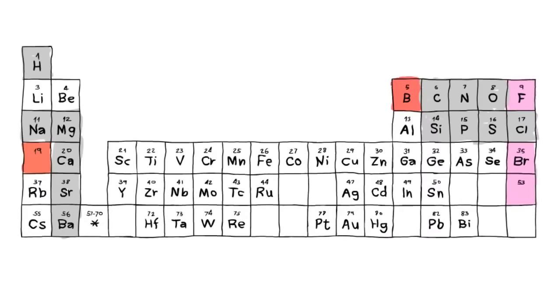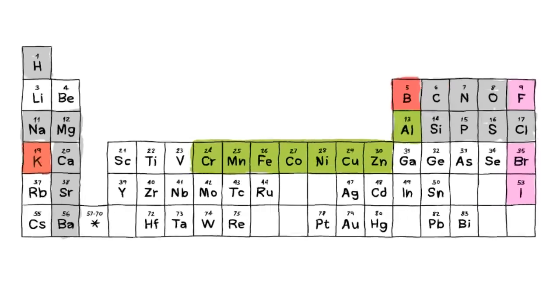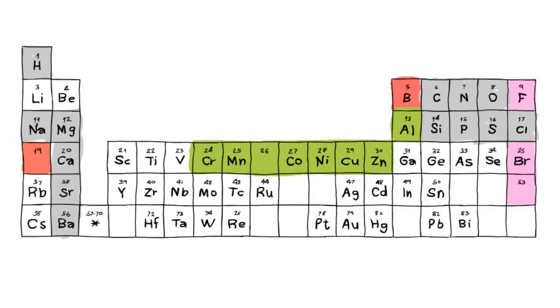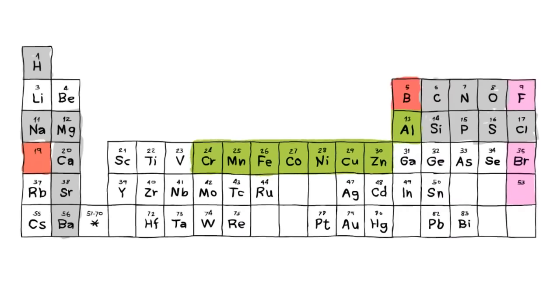Coral Colors B contains the minor elements potassium and boron. Potassium is associated with the production of red colors in corals. Coral Colors C is a complex of iron and other light metals that are related to the green-yellow colors in the corals.